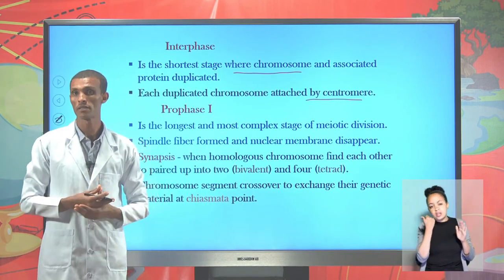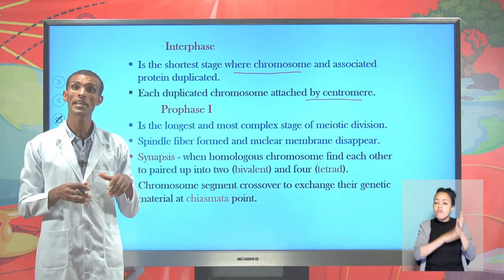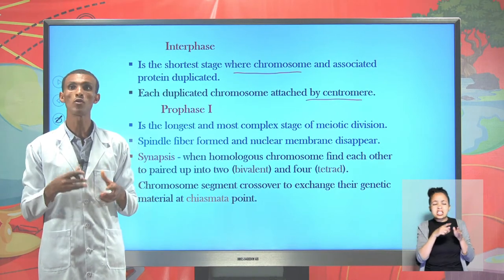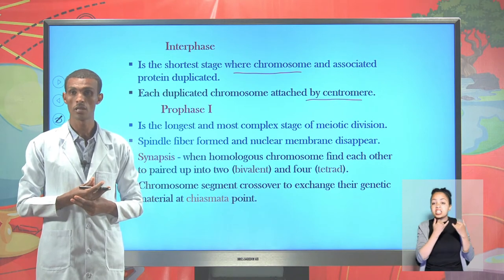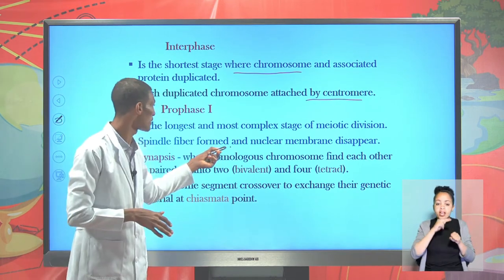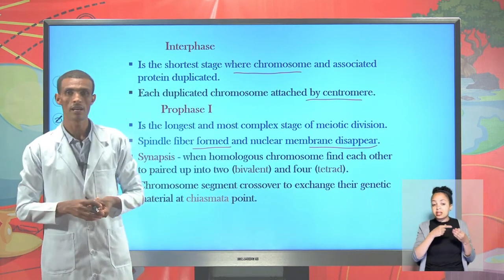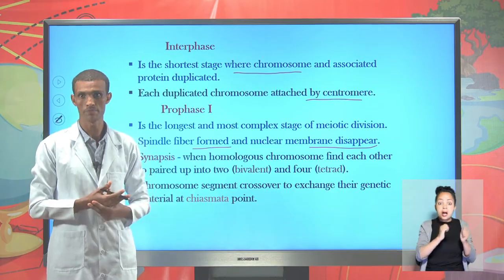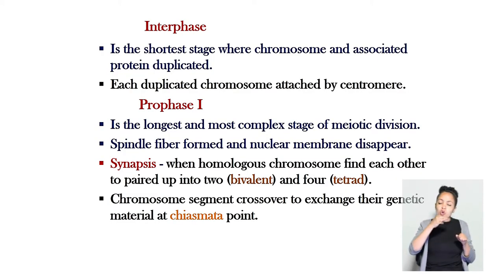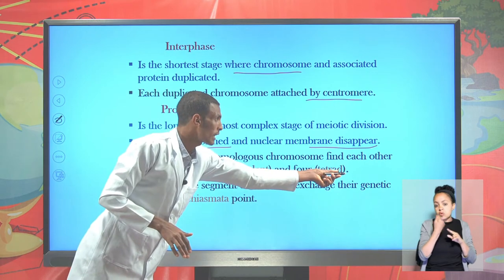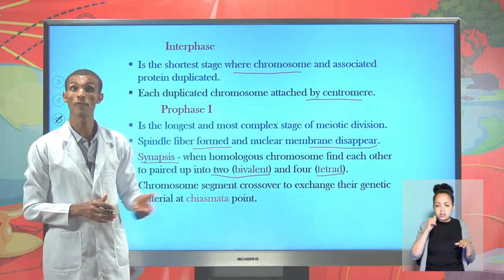The first phase of meiosis one is prophase one. Of all phases in meiosis one, it is considered the longest and most complex stage of meiosis cell division. During this phase, spindle fibers form and the nuclear membrane disappears. The disappearance of the nuclear membrane and appearance of spindle fibers allow homologous chromosomes to be moved around the cell. Homologous chromosomes undergo synapsis — they pair up according to karyotype, shape, and size, forming pairs called tetrads or bivalents.